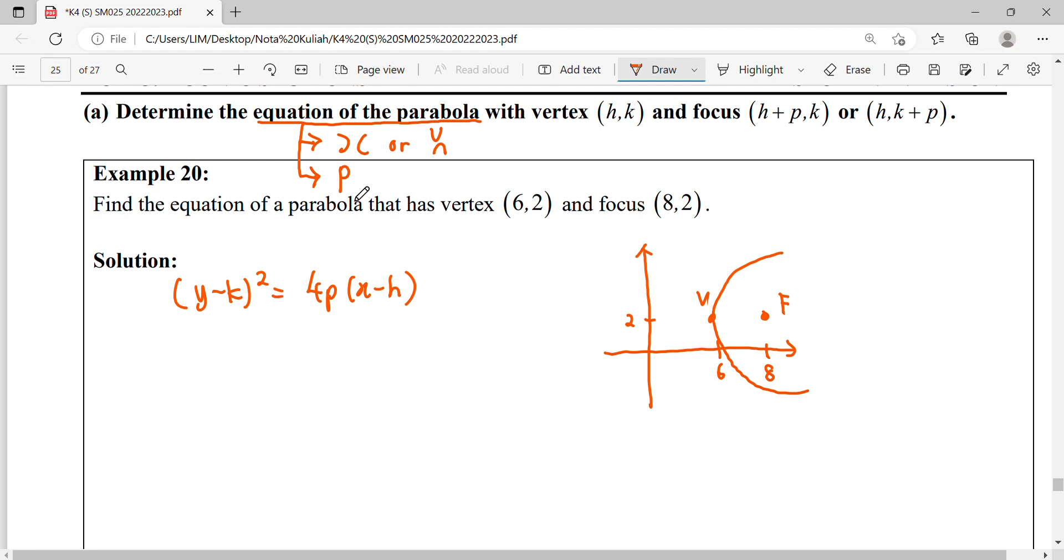Next, we're going to identify what is our vertex and what is our P value. So the vertex is given where X equals 6 and Y equals 2. When we substitute into our parabola formula, it will be (Y minus 2) squared equals 4P(X minus 6).